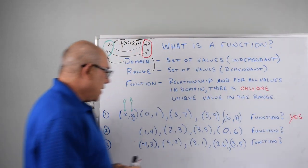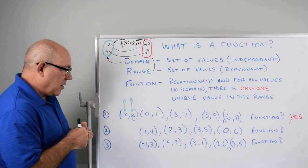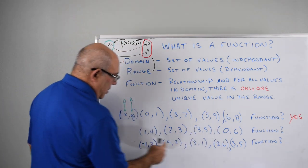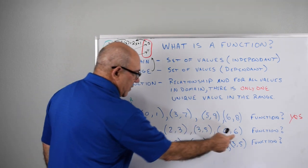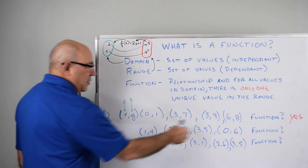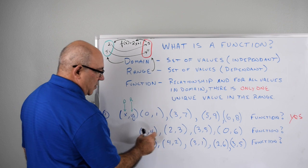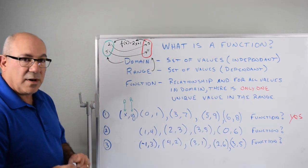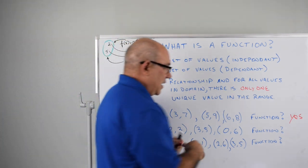So let's go to the second one. Now in this one, we have 1, 2, 3, 0, 4, 3, 5, 6. All unique for every one of these. There's only one. Every part of the domain, there's only one in the range. So we would see that one as yes.